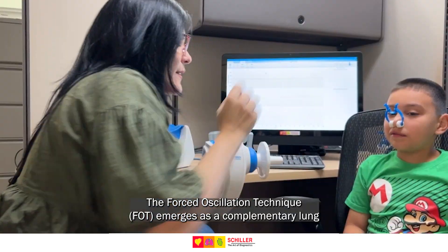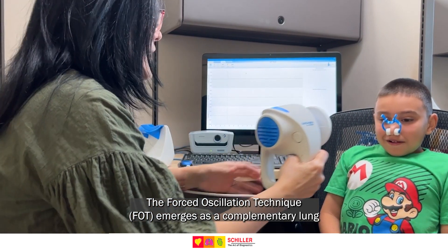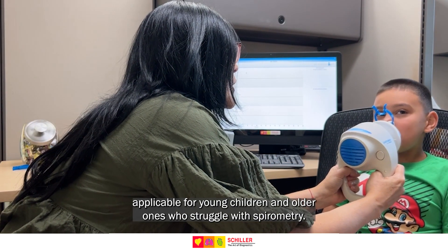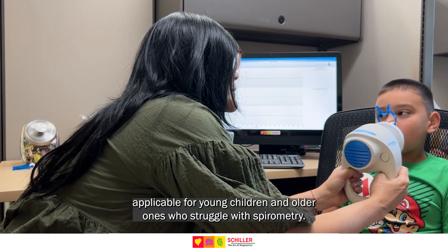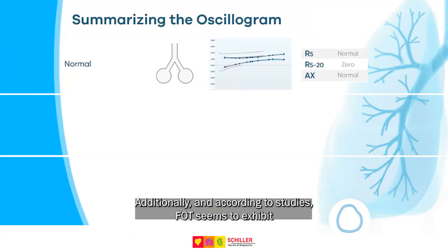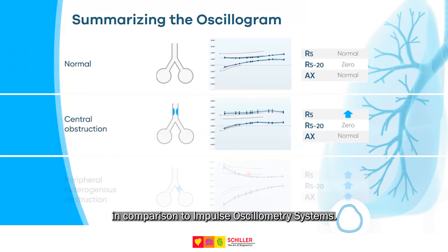The forced oscillation technique, FOT, emerges as a complementary lung function approach applicable for young children and older ones who struggle with spirometry. Additionally, and according to studies, FOT seemed to exhibit greater sensitivity in exploring the characteristics of airway elastants in comparison to impulse oscillometry systems.